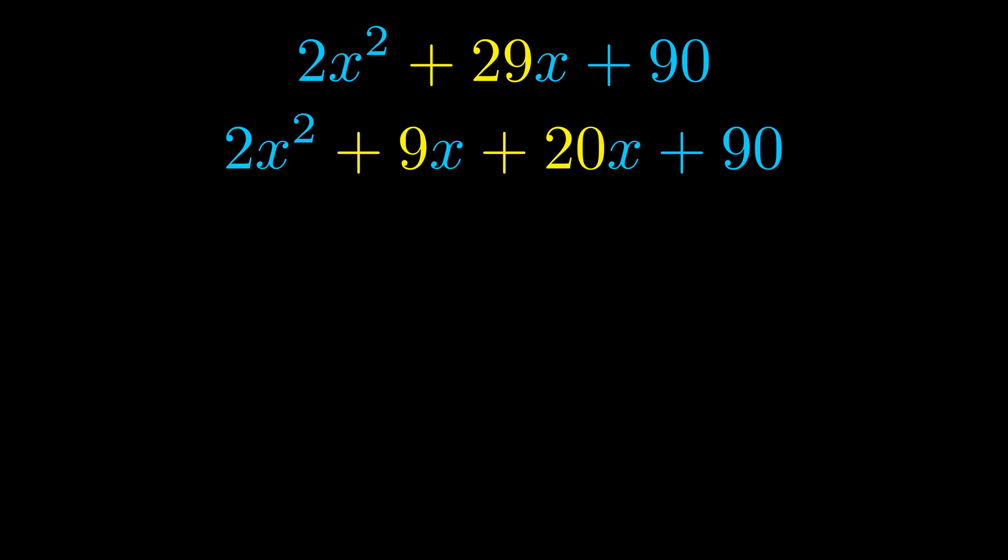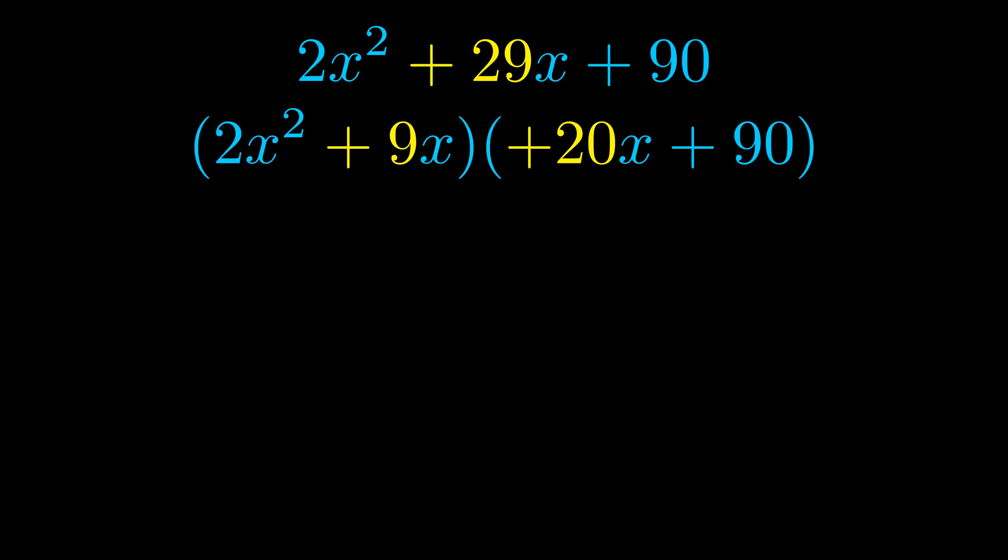Once we've done this we go ahead and put parentheses around the first term and the last term. And we do that so that we can take the greatest common factor out of both terms. We can see the greatest common factor is now outside in green.